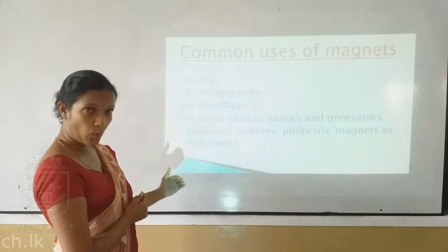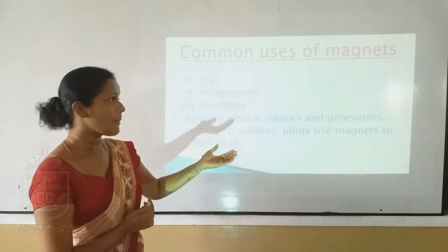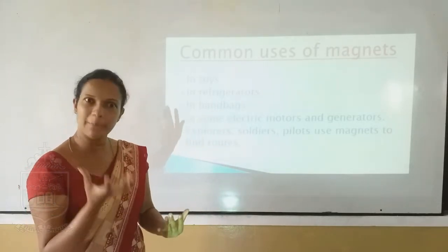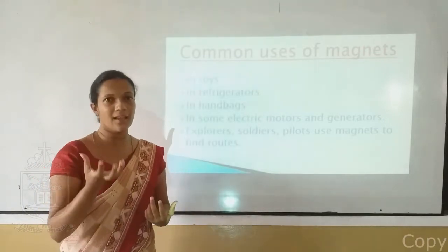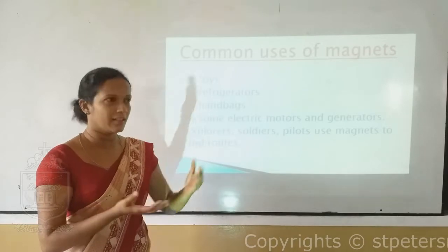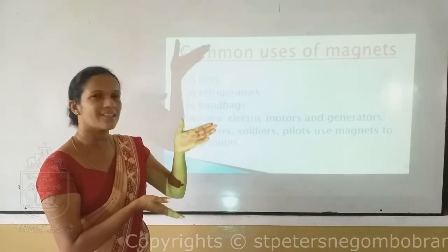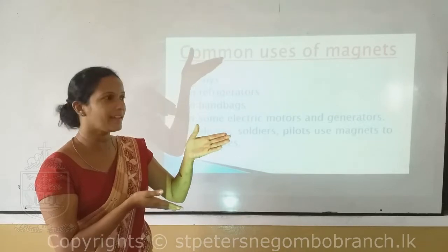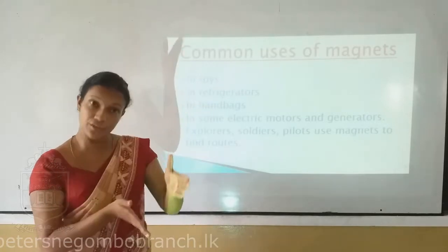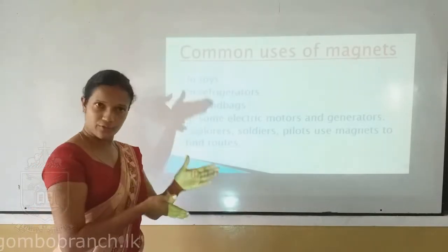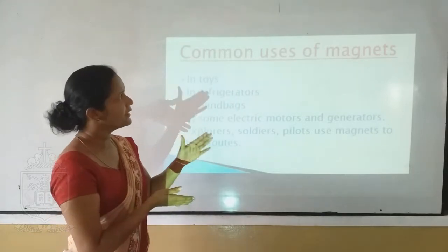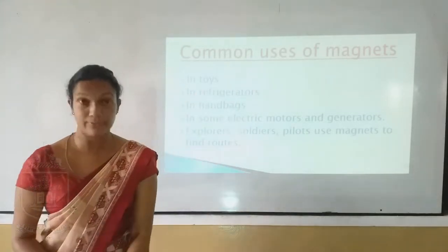Explorers, soldiers, and pirates use magnets to find the route using the compass. A compass is a thing that we can find the direction with. The compass always shows the north direction, and using that compass we can easily find out which way we are and which way we should go. It's a very helpful thing to make our work easier.